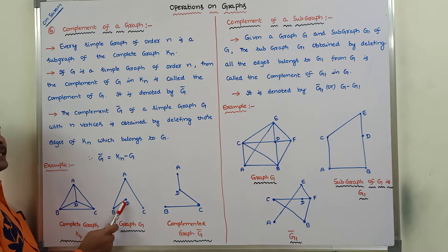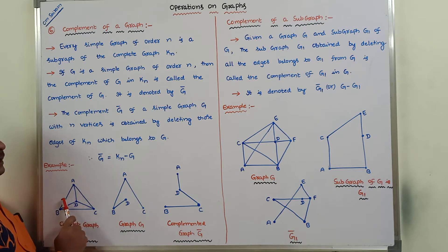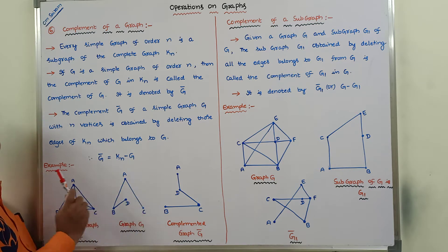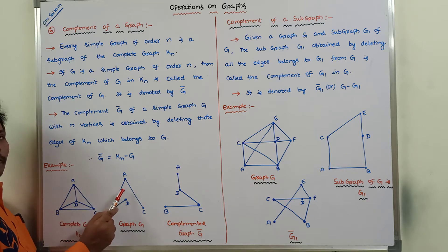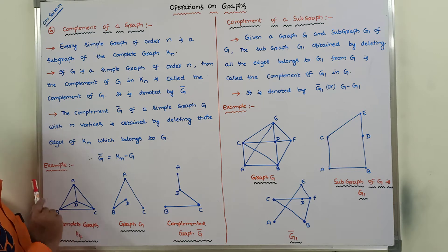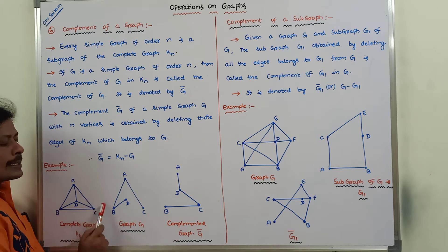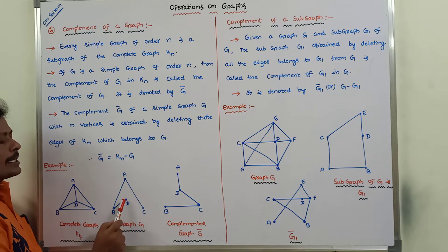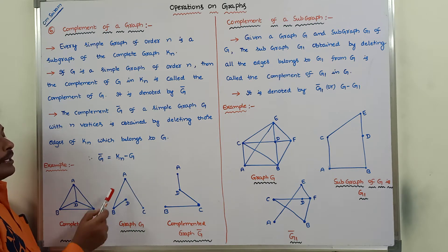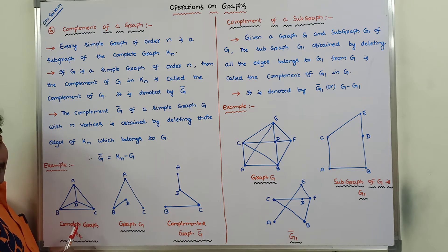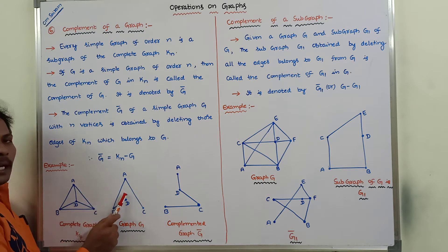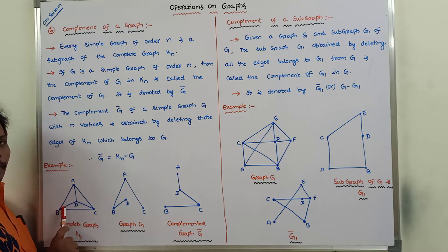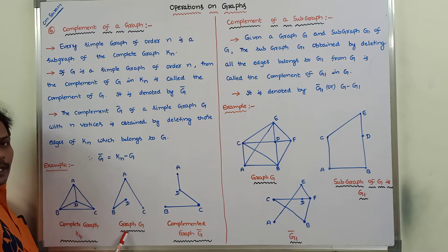Now observe this graph and this graph. This is the complete graph with four vertices. This is the given graph with four vertices. This graph is a subgraph of complete graph K4. This is a simple graph because it does not contain any self-loops at each and every vertex and does not contain any parallel edges between the vertices.